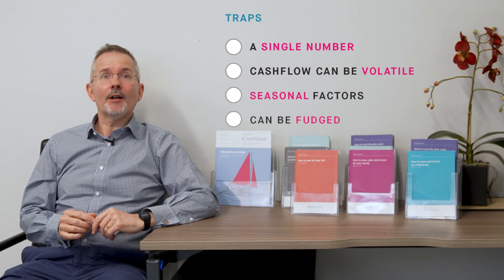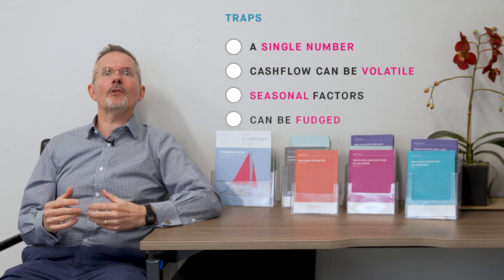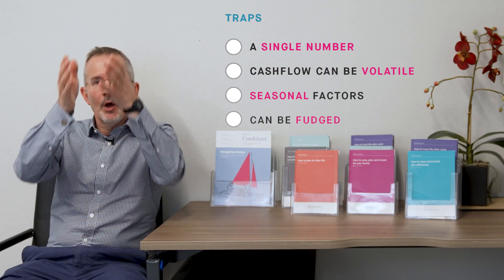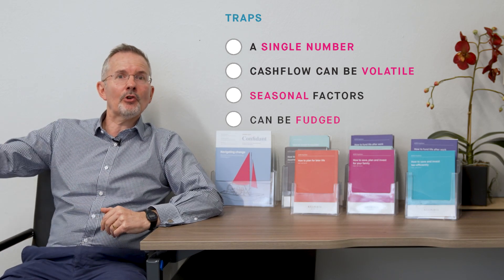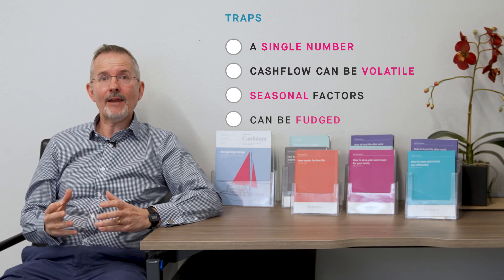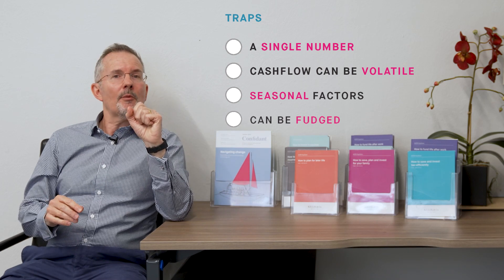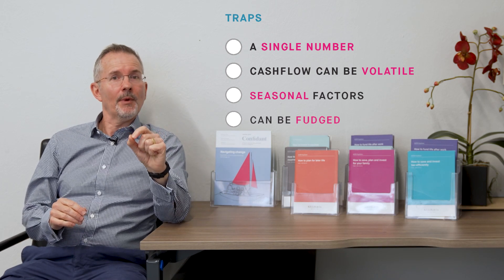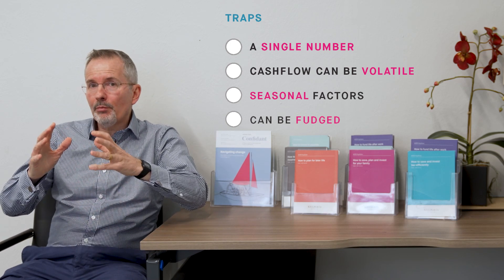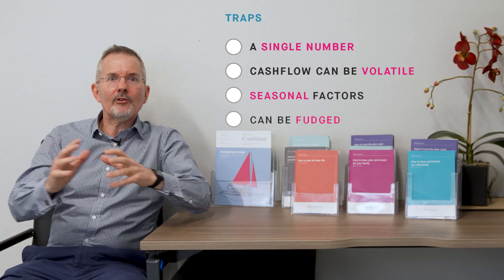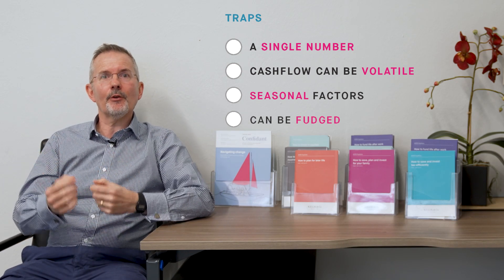Cash can be fudged. To give you a very simple example, if a finance director is anxious to show more cash flow when they cut off at the end of a financial year and prepare their accounts, what they might do is call in cash from debtors — people who owe them money — and hold off paying cash to creditors. So the business, in the very short term, gives the impression of being more liquid than it actually is in reality. That's not a trick you can pull multiple years consecutively, but it is a way to window dress the financial statements where cash flow is concerned.